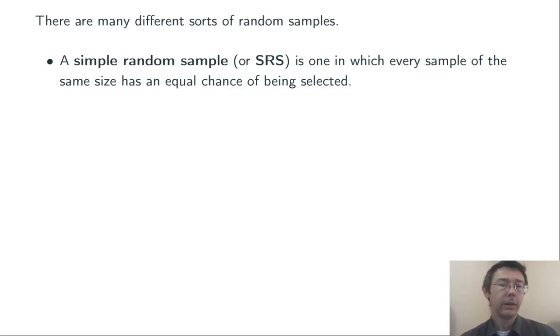Typically, the way this is done is by getting a list of the members of the population, numbering them all, and then using a random number generator to pick out the desired number of them.